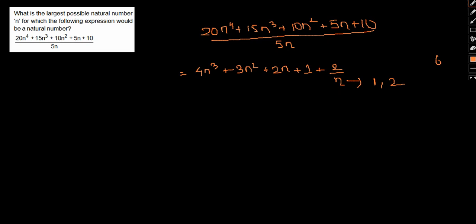Since it is a natural number we cannot include 0 in this regard. So only 1 and 2. If n equal to 1 then we will have a term like 4 plus 3 plus 2 plus 1 plus 2. So the entire expression would actually come out to be 7, 8, 9, 10, 11, 12. So this is what the entire expression would be.